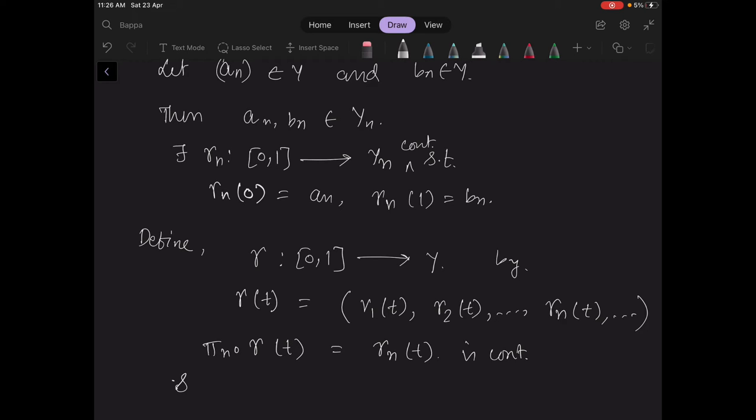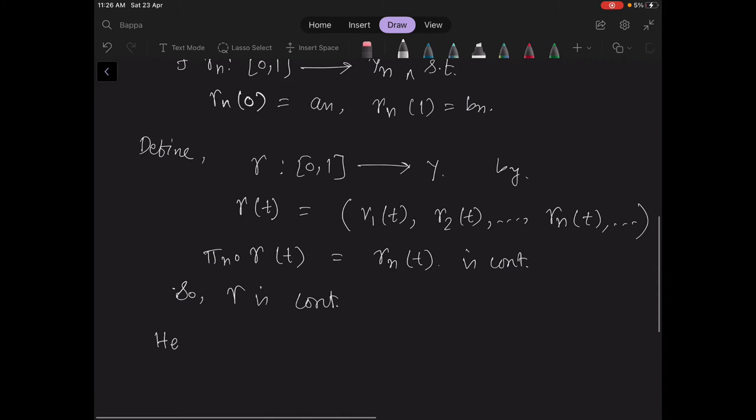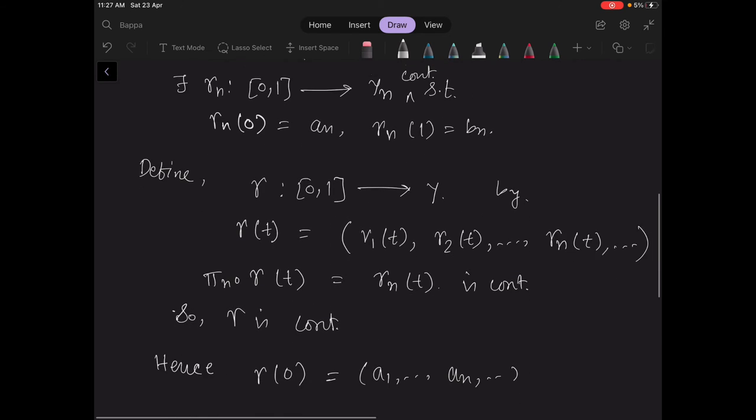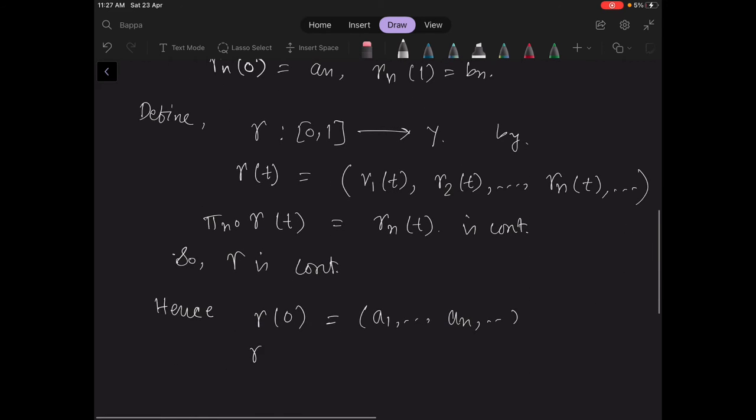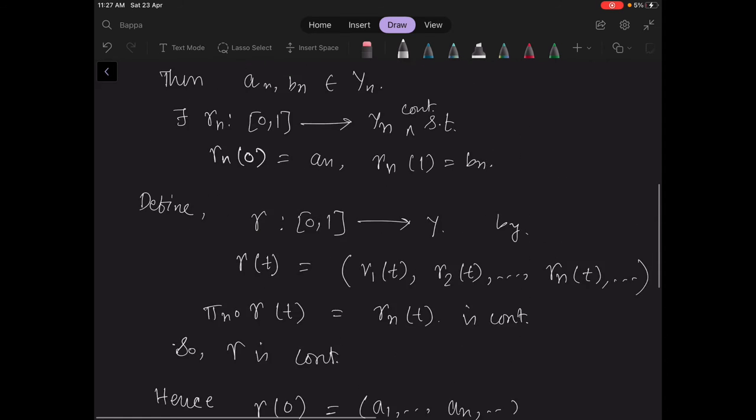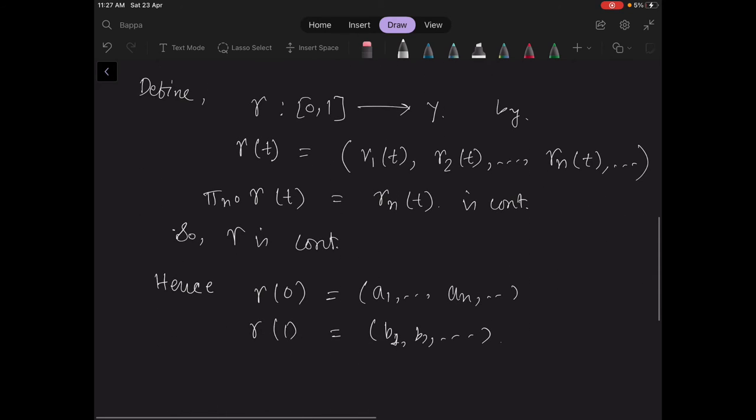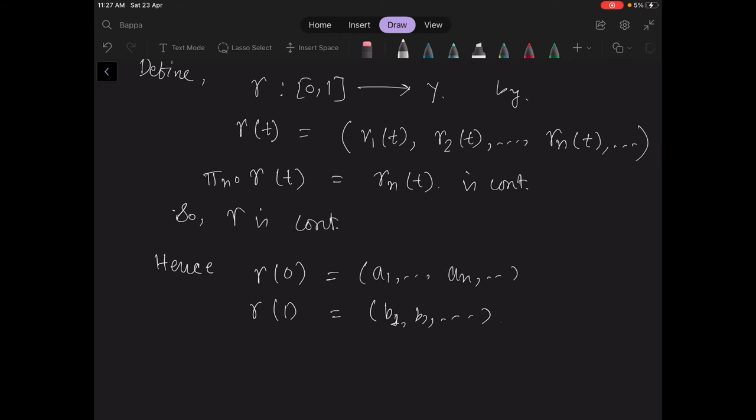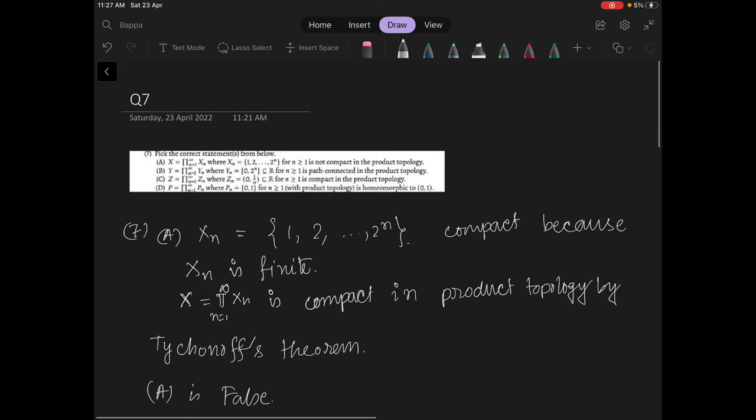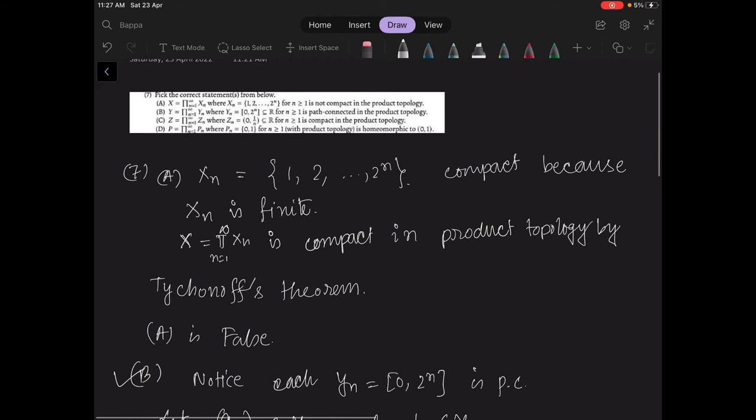So gamma is continuous and hence we get that gamma 0 equals a1, a2, which is the first point in y, and gamma 1 equals b1, b2 and so on, the second point of y, and they are connected by this gamma. So this y is path connected. So option B is correct.